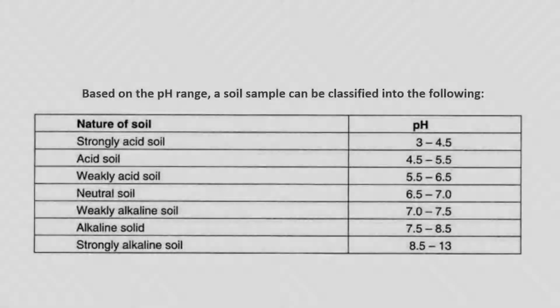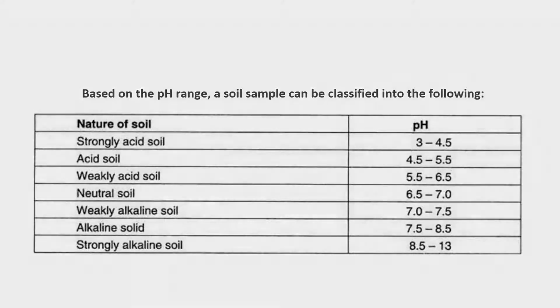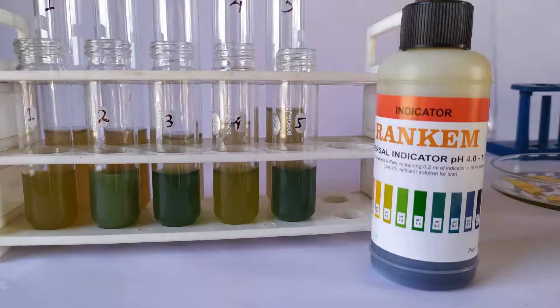Based on the pH range, a soil sample can be classified into various categories. Soil pH is usually determined with the help of pH test papers or universal pH indicator solutions. In this video, we'll determine the pH of 5 different samples of soil collected from 5 different locations.